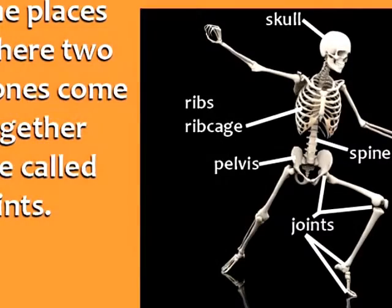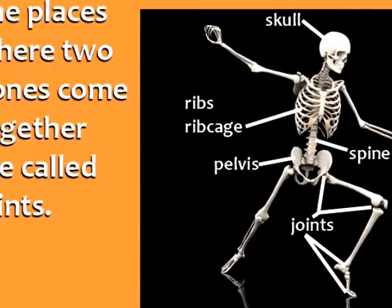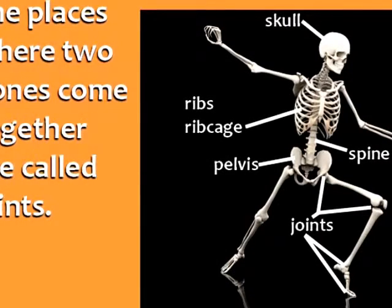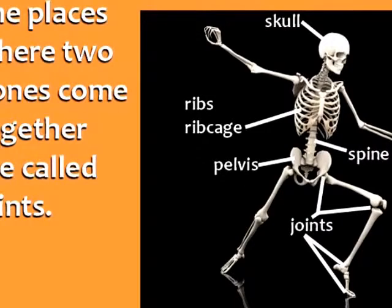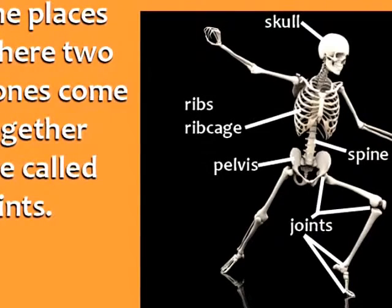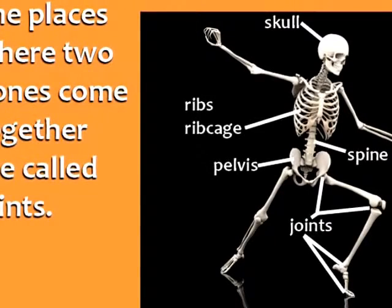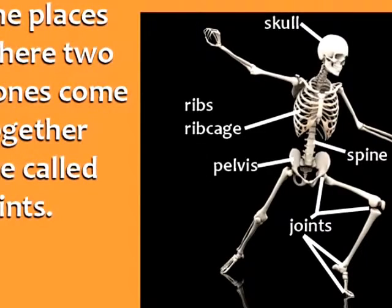Your skeleton is made of 214 bones. The places where two bones come together are called joints. For example, your knees, elbows, wrists, ankles, shoulders, etc.